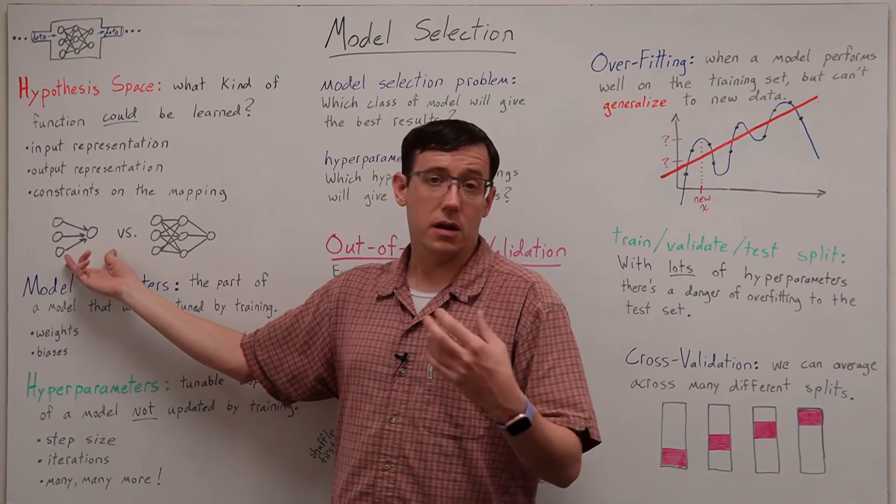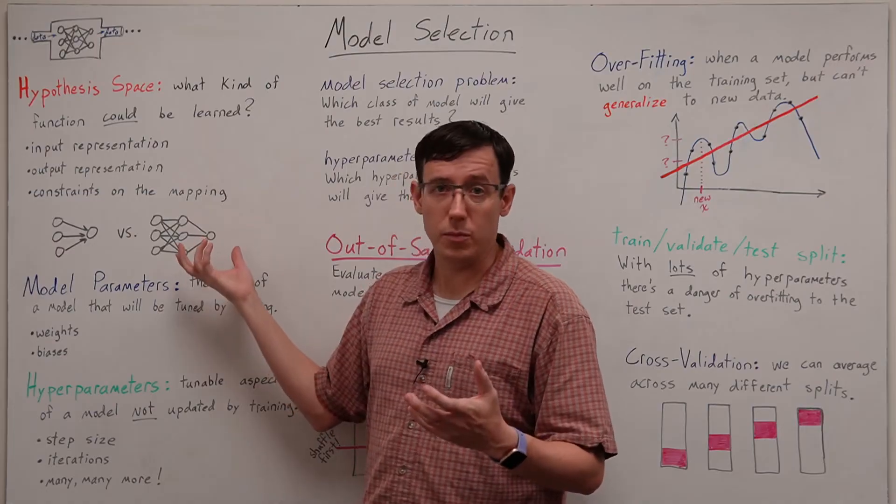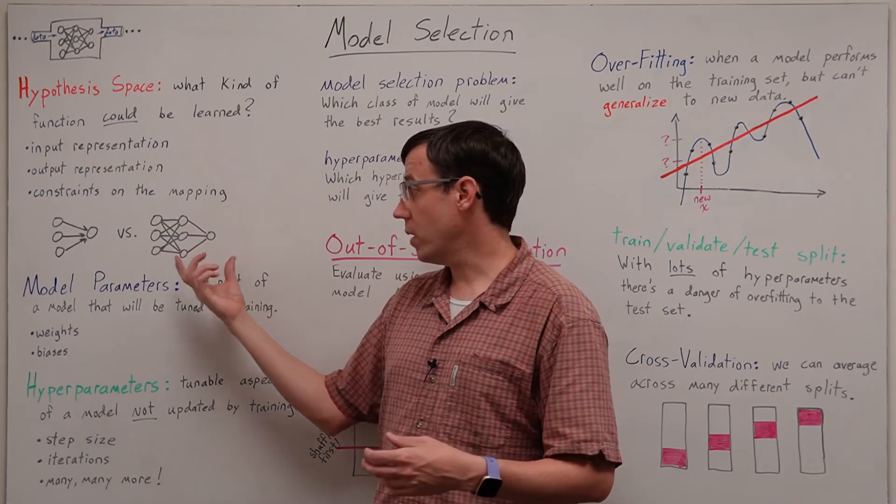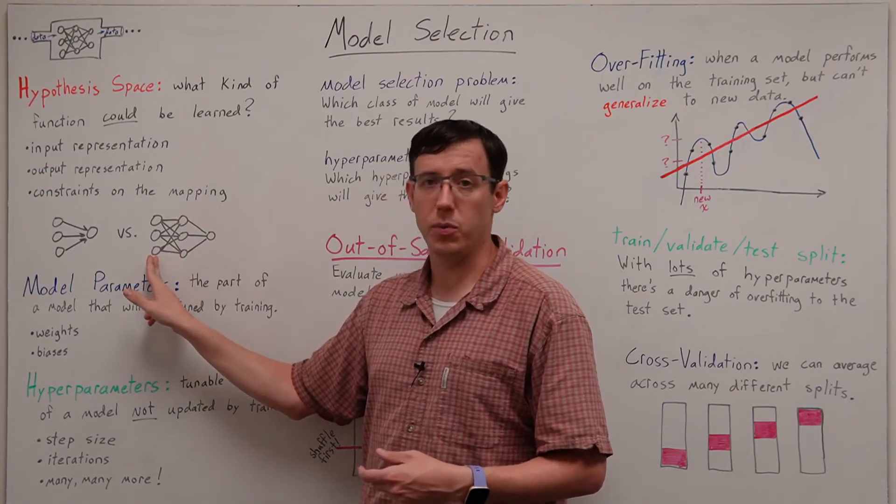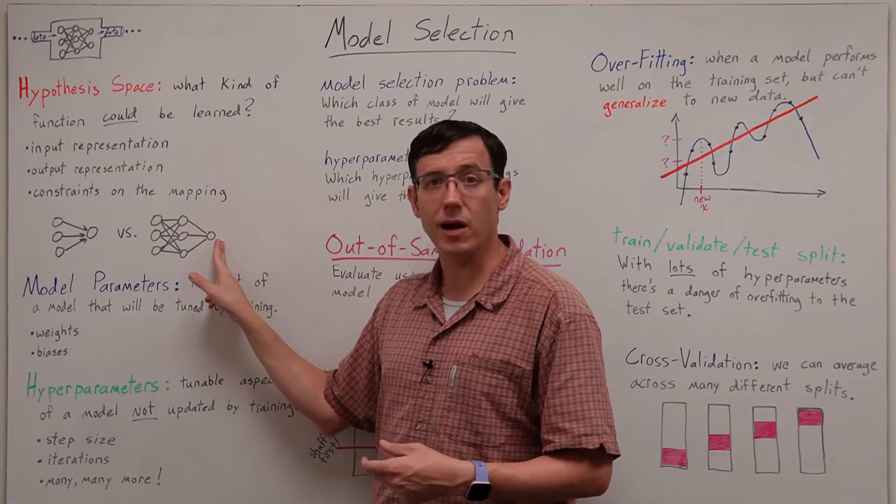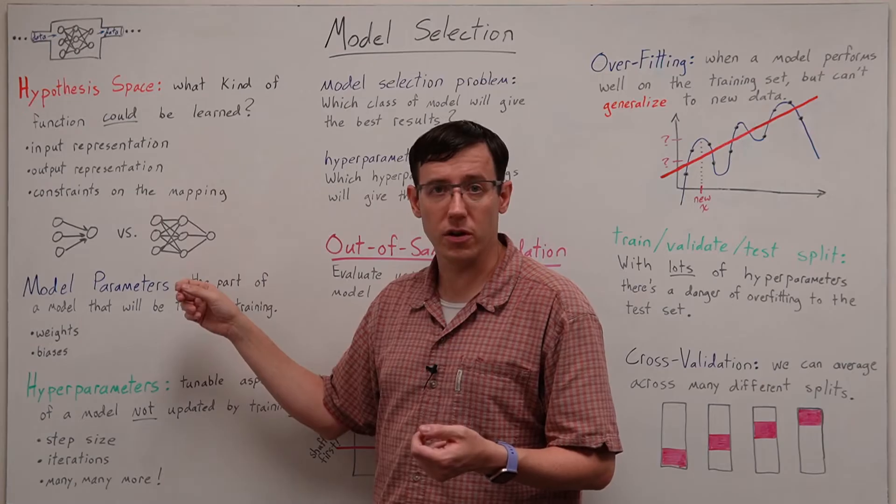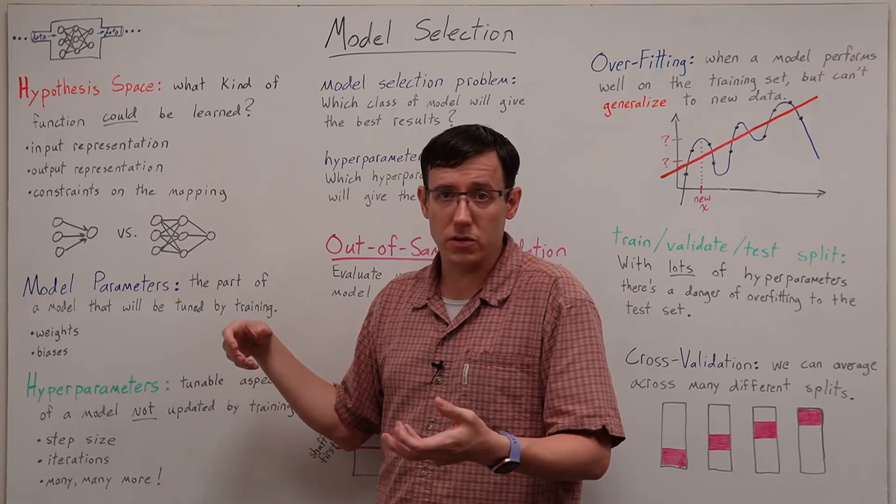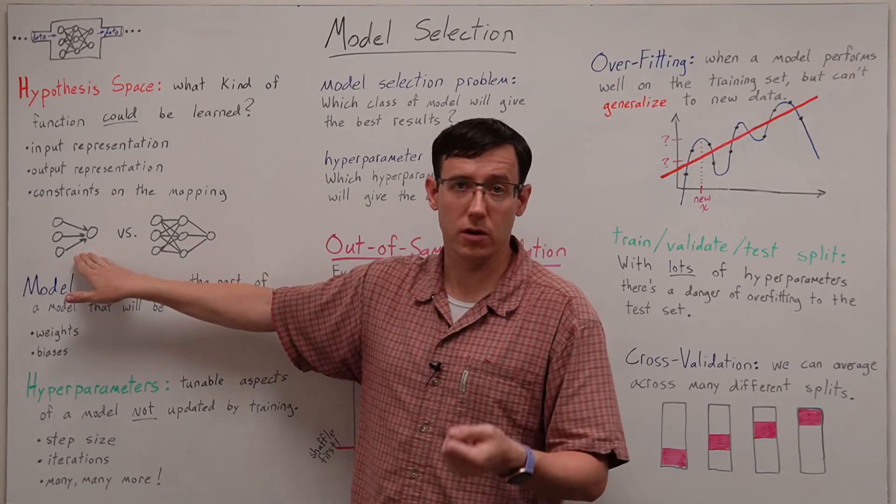If we wanted a nonlinear decision boundary, there are other types of model available. For example, a neural network with more nodes but the same number of inputs and the same number of outputs could still perform classification on three-dimensional inputs but could also divide the space of inputs in more complicated ways than is possible with a single neuron.